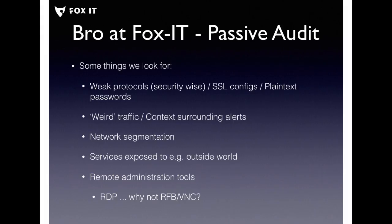We also look at services exposed to the outside world — air conditioning systems, access control systems all exposed at the network boundary, so anyone on the internet can tinker with your settings or open doors. And then remote administration tools. Bro already does the RDP protocol, so I thought, why not RFB or VNC — especially since they've been in the news lately.